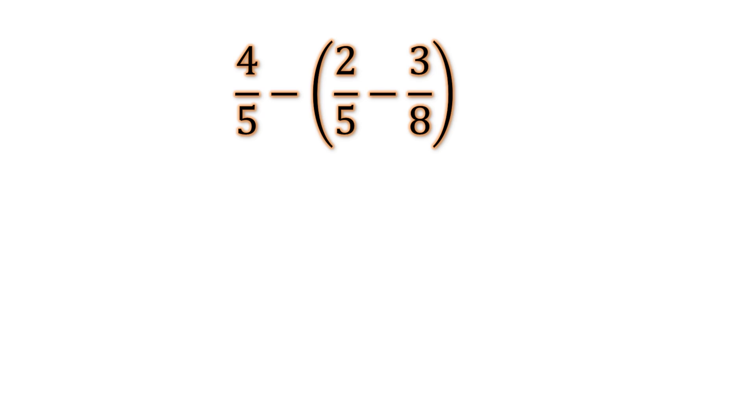The question is 4 over 5 minus in bracket 2 over 5 minus 3 over 8. Now for solving this fraction simplification.